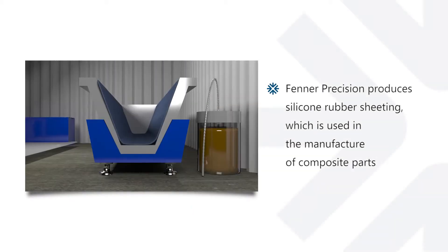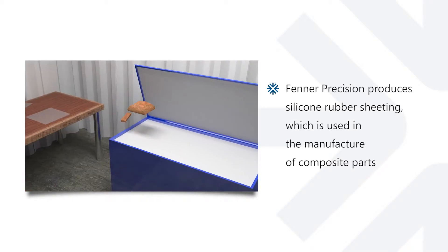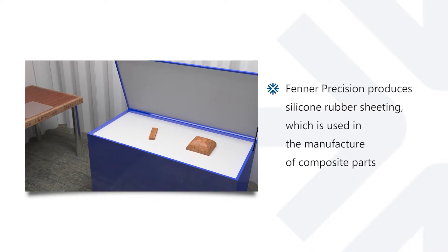Hello, my name is Neil Parkinson and I work for Fenner Precision in the UK. From our site in the UK, we produce silicone rubber sheeting used in the manufacturing process of composite parts.